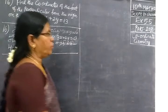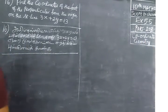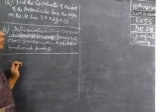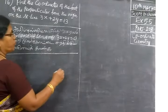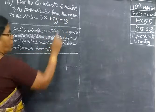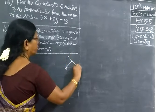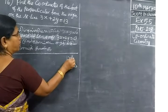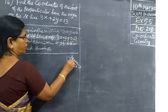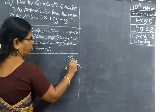Next, we want to find the coordinates of the foot of the perpendicular from the origin on the straight line 3x plus 2y equal to 13. The foot of the perpendicular is somewhere on this line. This is the origin, 0,0.